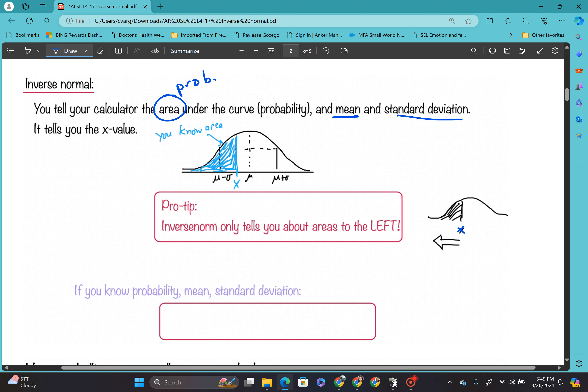All right. So the key thing to remember is inverse norm only tells you about areas to the left. So it only gives you anything with the areas to the left. If you're trying to look for something on this side right here, you have to be a little bit more creative. And we're going to do a problem just to help you visualize this.